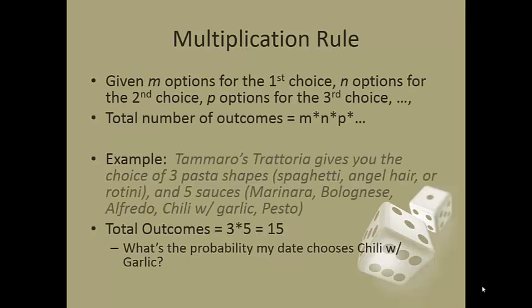So the first thing we're going to use is called the multiplication rule. It's named because I'm just multiplying stuff together. If I have a situation where I've got a certain number of options for my first choice, a certain number of options for my second choice, certain number of options for my third choice and so forth, I just multiply those options together. For example, Tammaro's Trattoria gives you the choice of 3 pasta shapes and 5 sauces.